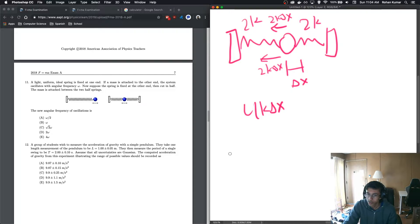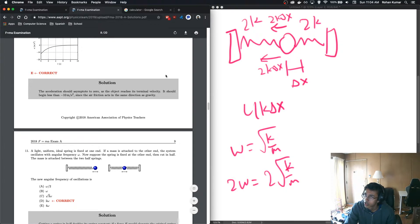So that basically means that our total force on the mass would be 4k delta x. So in this case, this is basically just a big spring with a spring constant of 4k. We know that our angular frequency is just root k over m. So that basically means when we multiply our k by 4, we get 2 omega is equal to 2 root k over m. This means that our answer should be D. Is this right? Let's check. Yes, it is.